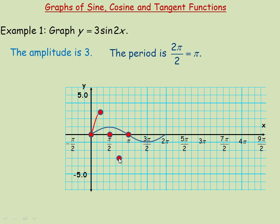We can draw our sine-shaped curve through those five points, and then duplicate it — going another pi for another cycle. We can keep duplicating the same shape to get as many sinusoidal curves as we want. That's what a graph of four cycles of y equals 3 sine 2x looks like.